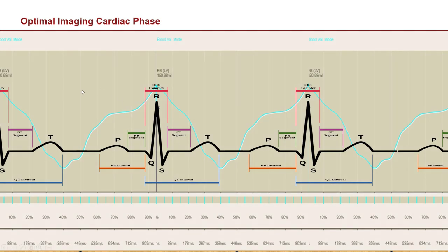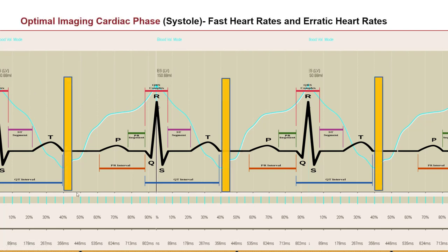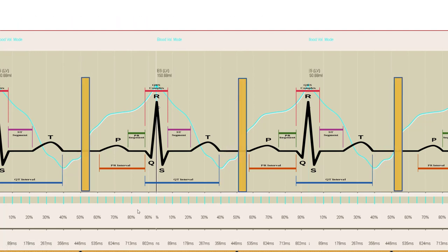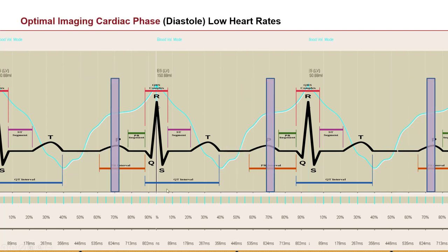If you take this blood volume map and superimpose it over the ECG, you can start to see patterns. The area in systole where there is very little motion corresponds to the end of the T wave. The area in diastole with relatively low motion is right on the P wave or right before the P wave. Those are generally the best places to look for low heart rates.